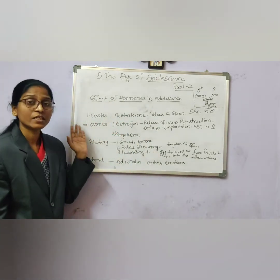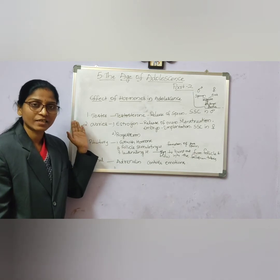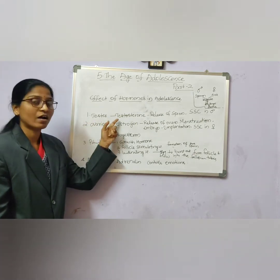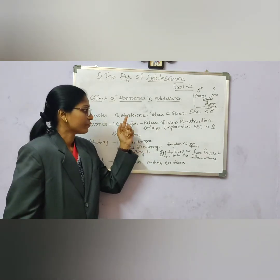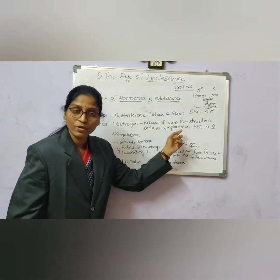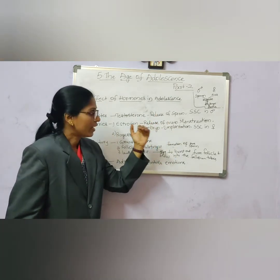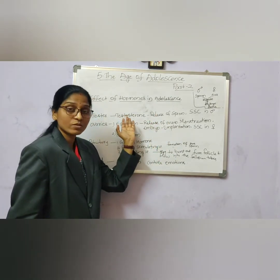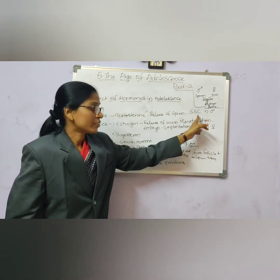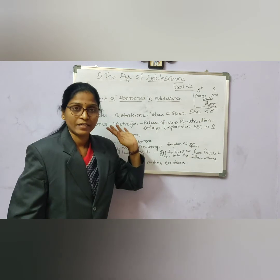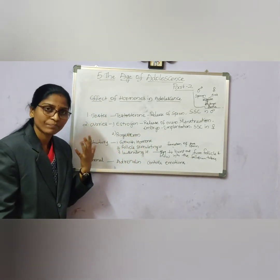The first gland is the testis. Testis is a gland which releases the hormone testosterone. Testosterone stimulates the production of sperms in adolescent boys and also helps in the development of secondary sexual characters in males. It starts acting at the age of adolescence.